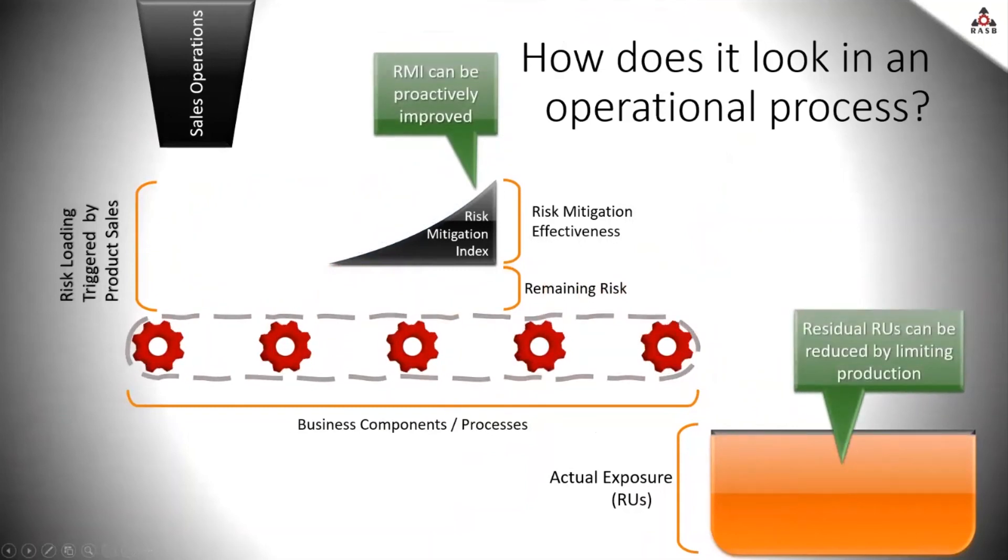You can see here is the inherent risk coming from operations and basically being split into mitigated risk and residual risk which gets to remain with the organization. And of course, these are the main two possibilities to act - either improving the risk mitigation index or reducing the production of more residual risk.